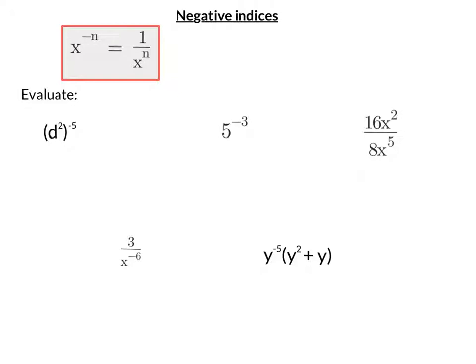So let's look at some examples to illustrate this. This first one here, we've got d squared all to the power of negative 5. So if you have powers either side of a bracket, you multiply them together.